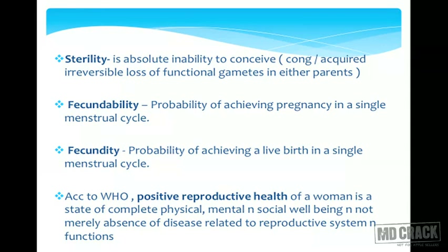Sterility is different from infertility and is less commonly used terminology. It refers to the absolute inability to conceive, due to congenital or acquired irreversible loss of functional gametes. Two confusing terms important for MCQs: fecundability is the probability of achieving pregnancy in a single menstrual cycle, whereas fecundity is the probability of achieving a live birth in a single menstrual cycle. The difference is 'pregnancy' versus 'live birth.'